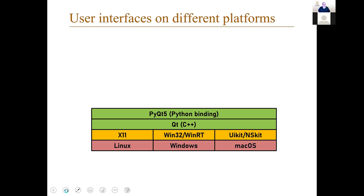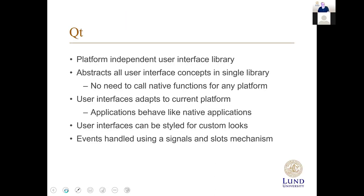You can use all the classes and objects in Qt from Python, and then write one application instead of three — one for each platform. That saves you a lot of code because you write once and it runs on all platforms. Qt is a platform-independent user interface library that abstracts all user interface concepts into a single library, so you never have to call any native OS functions.